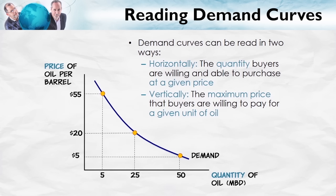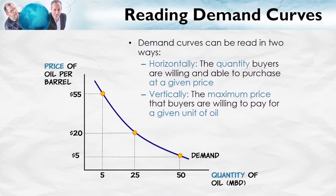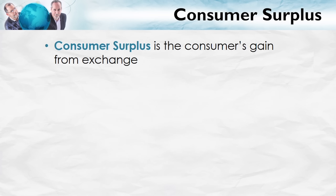The second way of reading the demand curve, the vertical method, begins at the bottom and works its way up. It tells us the maximum price that buyers are willing to pay for a particular unit of oil. We pick a quantity along the horizontal axis and ask: for the fifth millionth barrel of oil, what is the maximum amount consumers are willing to pay? We read vertically up to the demand curve and find that consumers are willing to pay at most $55 for that barrel. Similarly, for the 25th millionth barrel, consumers are willing to pay at most $20. Both the horizontal and vertical readings are useful — for some problems one is easier, for others the other is. It's important to be comfortable with both.